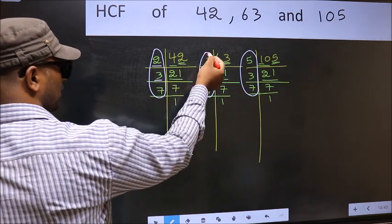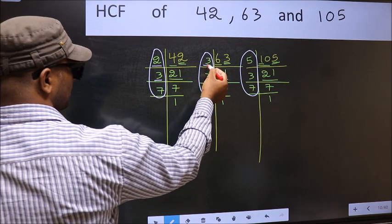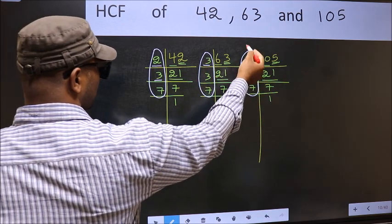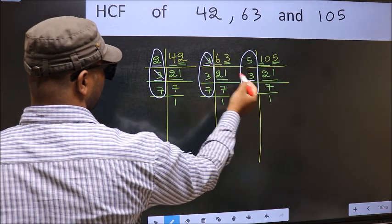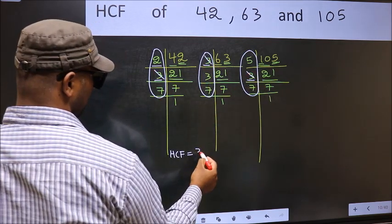Next number, 3. Do we have 3 here? Yes. So go to the next place. Do we have 3 here? Yes. So cut 3 right here.